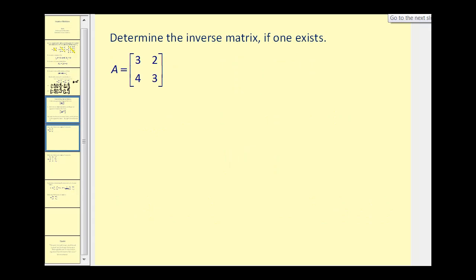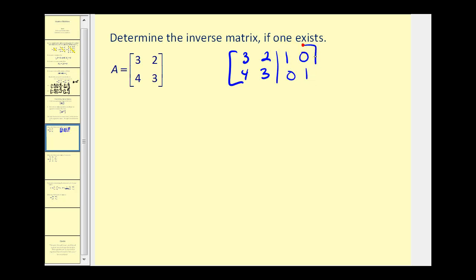Let's give it a try. To find the inverse of this matrix, we set up an augmented matrix with the given matrix on the left and the identity matrix on the right. Since this is a 2 by 2 matrix, we want to make the left side look like the right side — a 1 here, a 1 here, and these two elements to be 0.